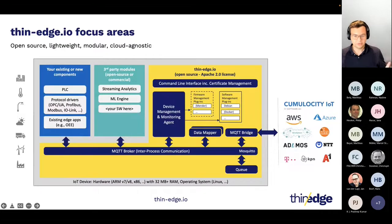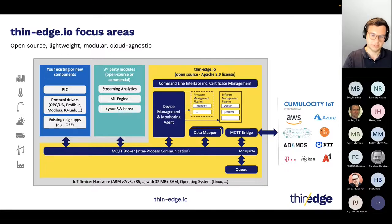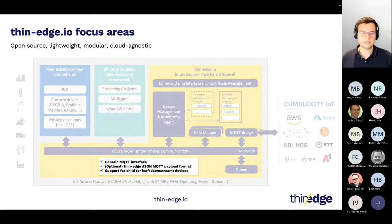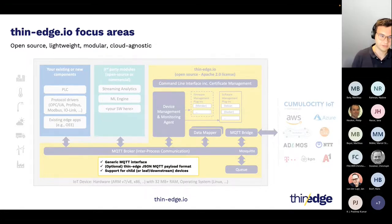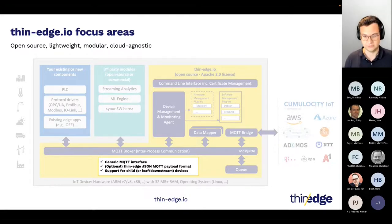Now let's take a very quick look at where we stand today. This is an overview of the architecture of ThinEdge I.O., and let's focus on the 0.6 highlights. Starting with communication and interfaces: what we offer today is a generic MQTT interface. You can use MQTT for the connection to your IoT platform, but also for inter-process communication. We also created a simplified so-called ThinEdge JSON format, so you don't have to worry about different payload formats, and with mappers you can translate into different formats.